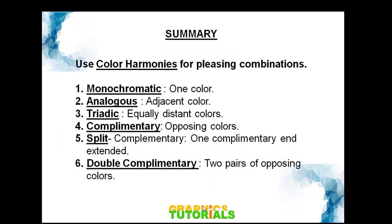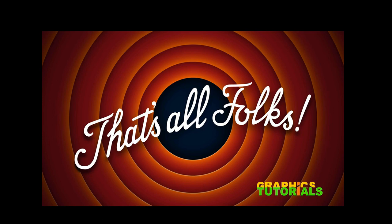In a nutshell, the six color harmonies are: monochromatic — one color; analogous — adjacent colors; triadic — equal distant colors; complementary — opposing colors; split complementary — one complement extended; and double complementary — two pairs of opposite colors. Go through this video once again for a better experience with colors. Subscribe to my channel Graphics Tutorials. Thank you for watching.